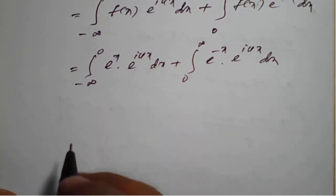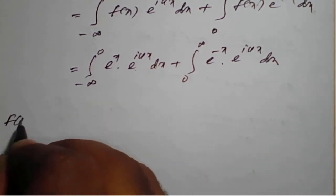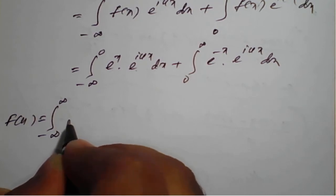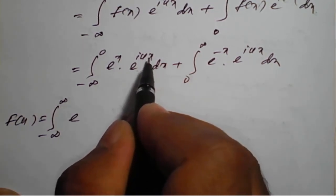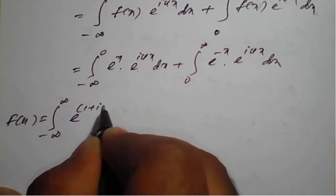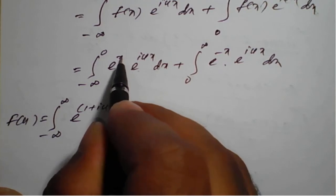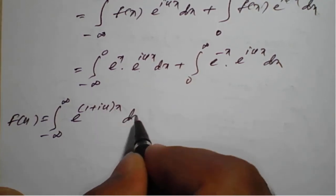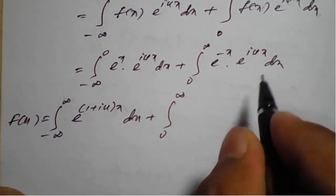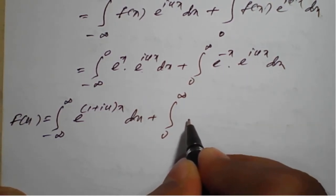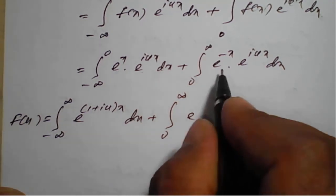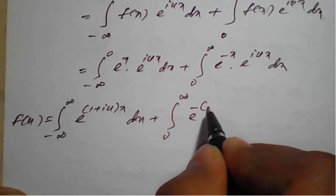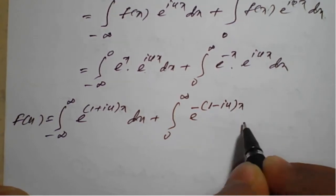Since the bases are the same, we add the powers. For the first integral, e^x · e^(i·u·x) = e^((1 + i·u)·x). For the second integral, e^(−x) · e^(i·u·x) = e^(−(1 − i·u)·x), taking minus as a common factor to get e^(−(1 − i·u)·x).